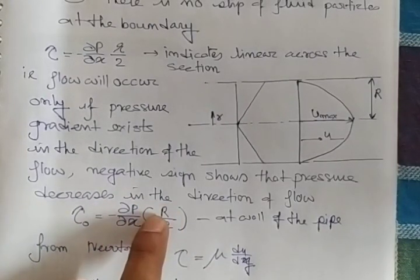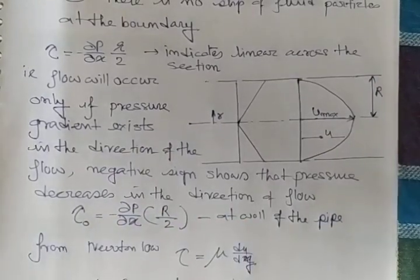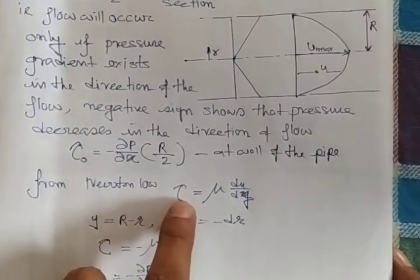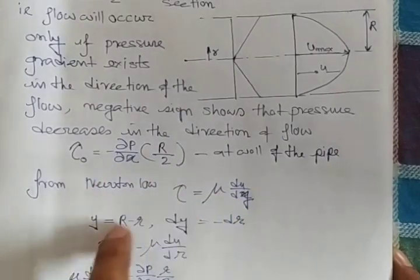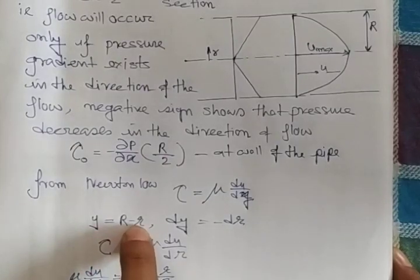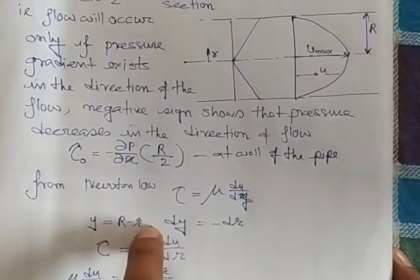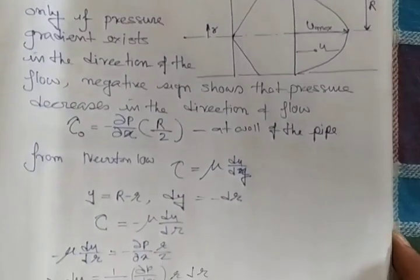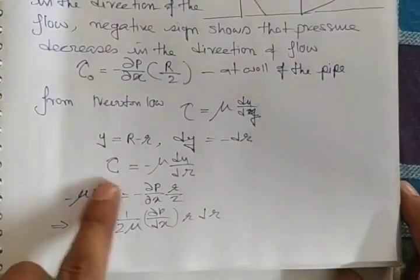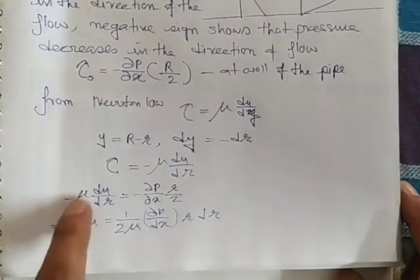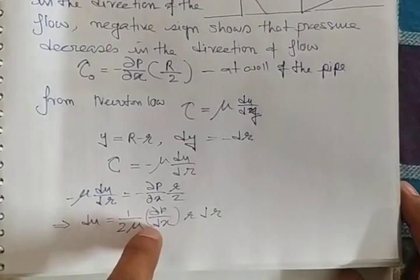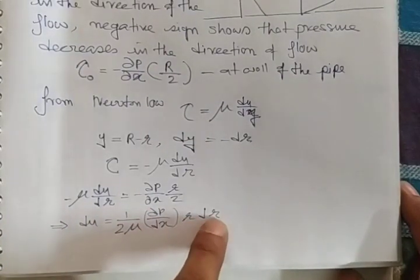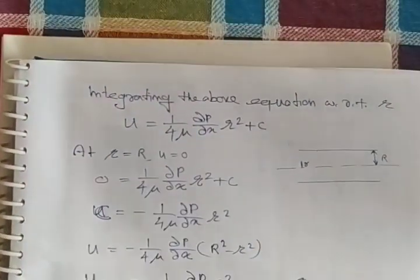From Newton's law, tau equals mu du by dy. If you put the values for y as capital R minus small r, you will get one equation. Through derivation, du equals 1 by 2 mu dp by dx r dr.